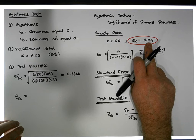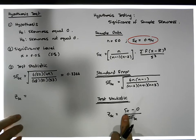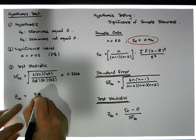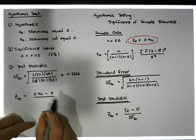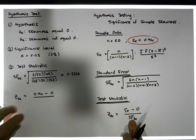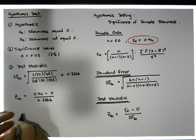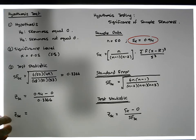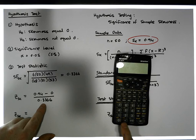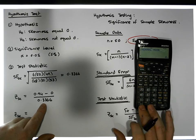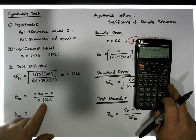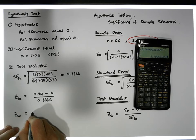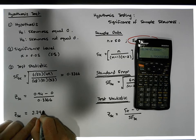The question is: does it deviate enough from zero? Does it deviate enough from a symmetric distribution to have confidence in that deviation? Our sample skewness is 0.94, so we have 0.94 minus 0 (the null hypothesis value) divided by the standard error of 0.3366. That gives us a test statistic z of approximately 2.7926.